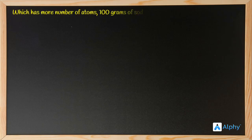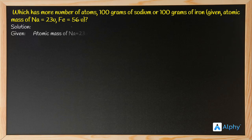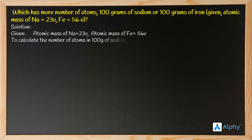Hello and welcome. Let's solve a numerical on mole concept: which has more number of atoms — 100 grams of sodium or 100 grams of iron? Given: atomic mass of sodium is 23u and atomic mass of iron is 56u. Let's solve this — the atomic masses of sodium and iron are given in the question.